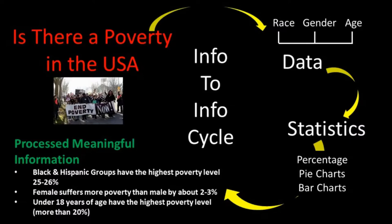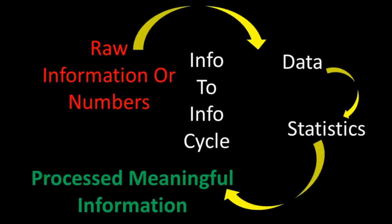We will learn later on how to collect more useful data and perform more detailed statistical analysis to reveal much more information. But the idea now is to understand the concept of the Info-to-Info Cycle: from raw information all the way to meaningful information, going through meaningful data, statistical analysis, statistics, and then interpretation of the statistical outcomes.